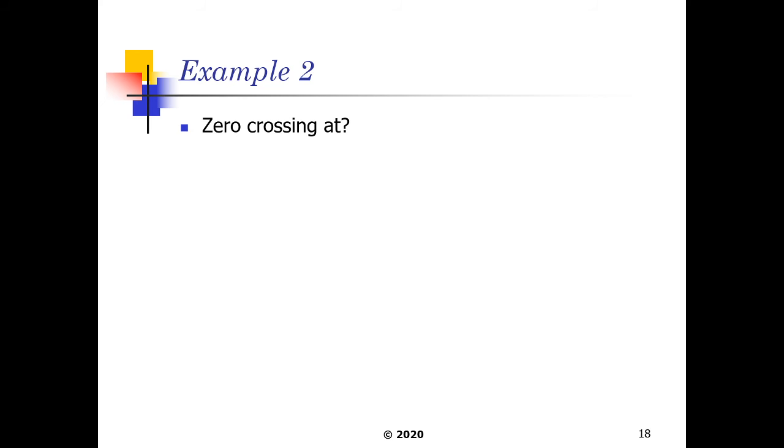So our zero crossings are basically given at capital omega equal to 2 pi divided by N. But we also know that omega is a function of common omega multiplied by the sampling time. If we map those two equations together, we can get common omega here is equal to 2 pi divided by NT.